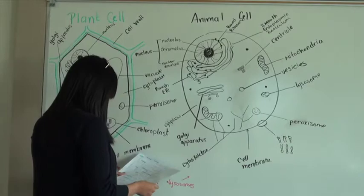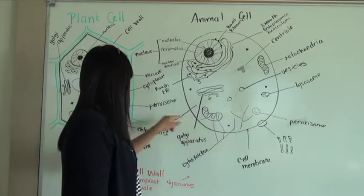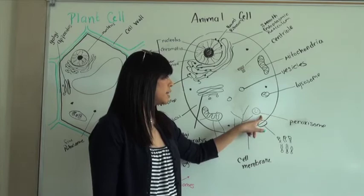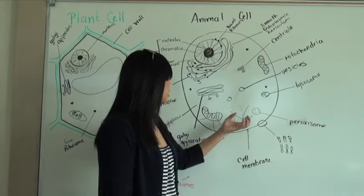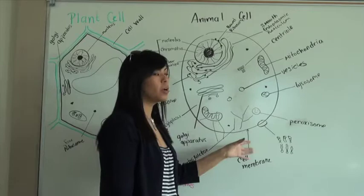Now we also have these structures right here called the peroxisomes. The peroxisomes are shared within the plant cell and animal cell, and they pretty much detox things. They have these enzymes that detox harmful, possibly harmful molecules that could enter the cell.